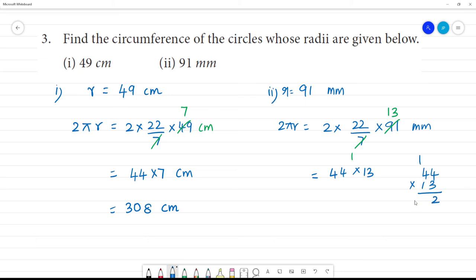4 × 3 is 12, remainder 1. 4 × 3 is 12 plus 1 is 13. 4 × 1 is 4. So the answer is 572 millimeter.